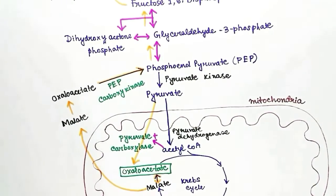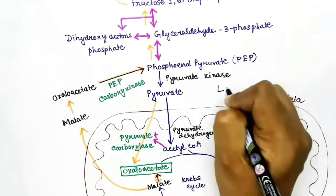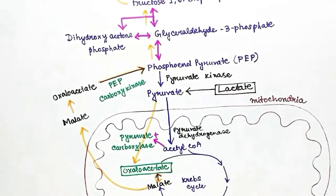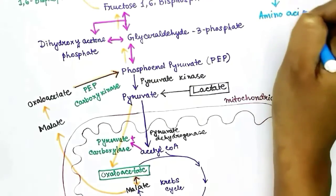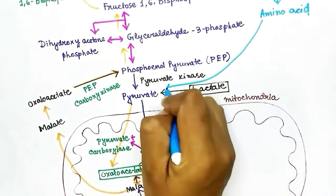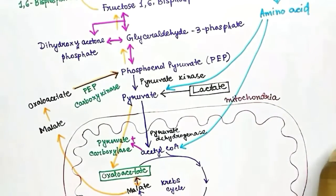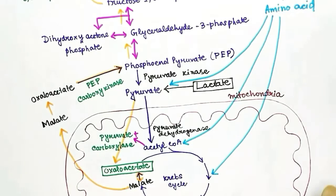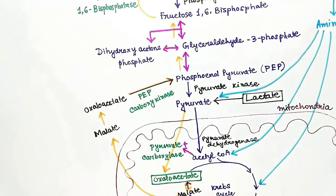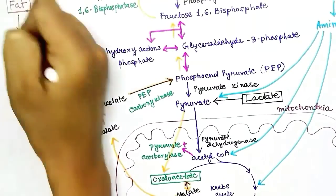To convert lactate to glucose, lactate must first be converted to pyruvate, and then pyruvate can be converted to glucose. To make glucose from amino acids, they can enter the gluconeogenesis pathway in three ways: some amino acids can be converted to pyruvate, some to acetyl-CoA, and some can enter via Krebs cycle intermediates. Acetyl-CoA and Krebs cycle intermediates can be converted to oxaloacetate and then enter the gluconeogenesis pathway.